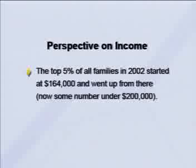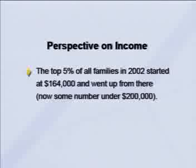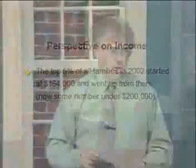Looking at the more detailed breakdown, almost all of that increase going to the top fifth of the income distribution was actually going to the top 5%. For perspective, the top 5% of all families in the U.S. in 2002 started at about $164,000 and went up from there. So that's the level of inequality we've got, and we know it has been going up as measured by these quintiles.